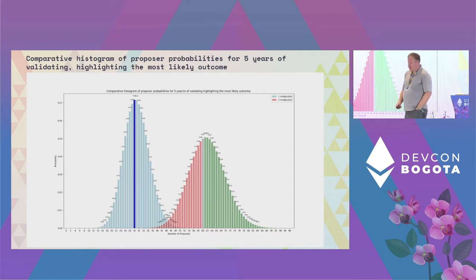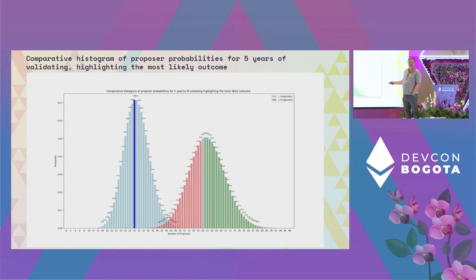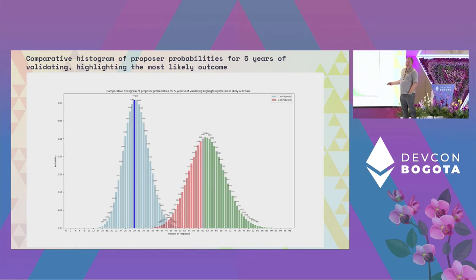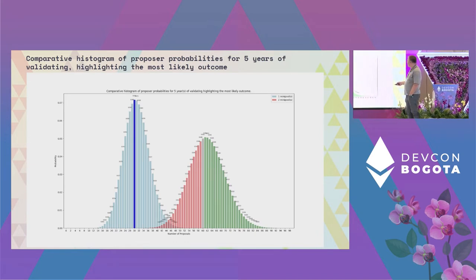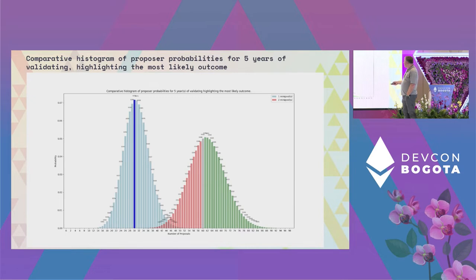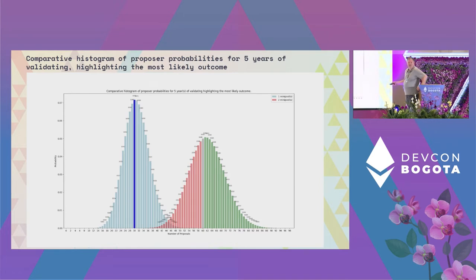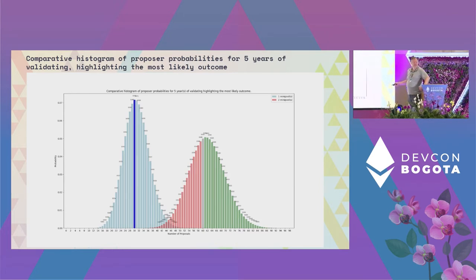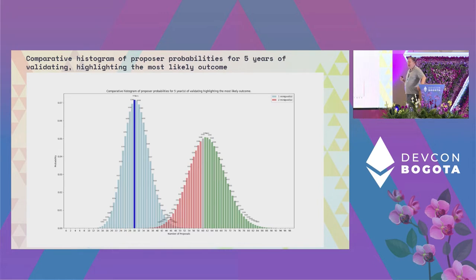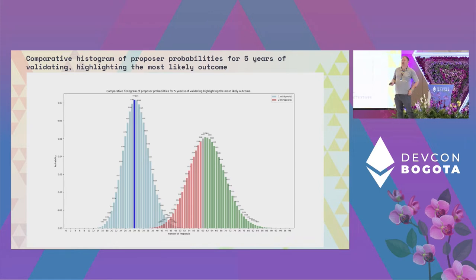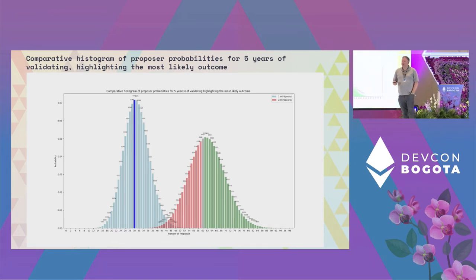This graph shows the probability over five years of receiving a block proposal. If you have a single validator — sometimes referred to as mini-pools in Rocket Pool terminology — over five years, given 4,025 validators on the blockchain, you will receive on average about 30 proposals over that five-year period. You might be unlucky and receive only 12, or as many as 50. It scales linearly: two validators gives an average of about 60. In addition to beacon rewards, you'll also get a chance at MEV.